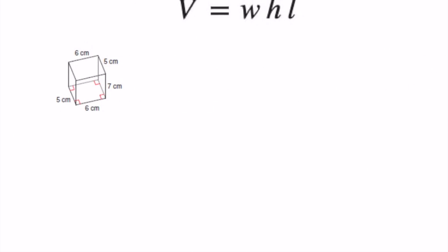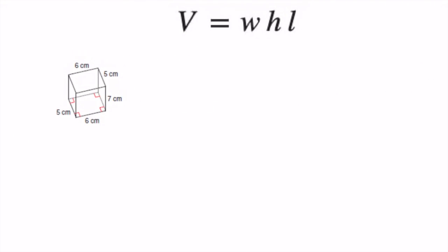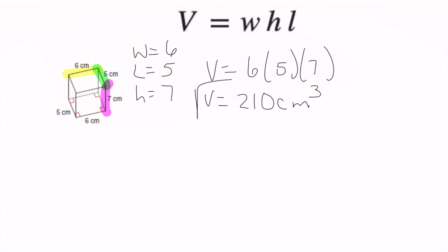Alright. Last one. So we have 6, 5, and 7. So width is 6, length is 5, height is 7. So volume equals 6 times 5 times 7. And that'll be 210 centimeters cubed. And that'll be the end of volume of our cubes and rectangular prisms.